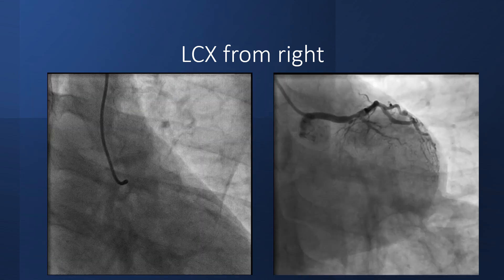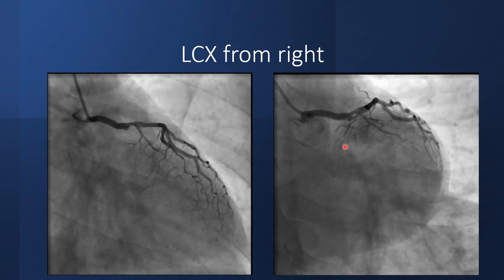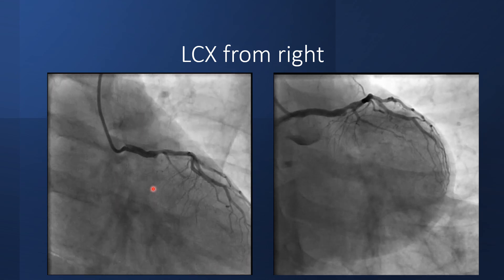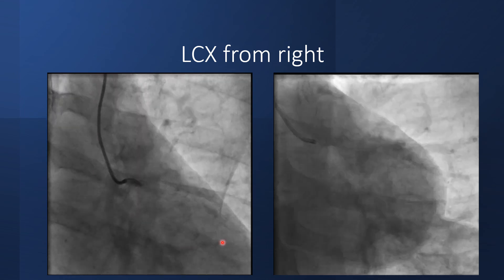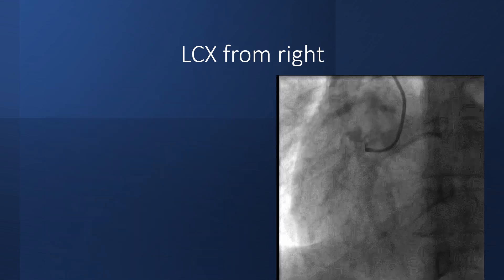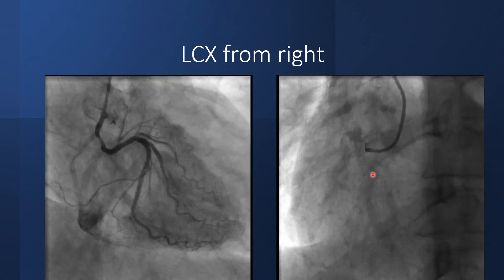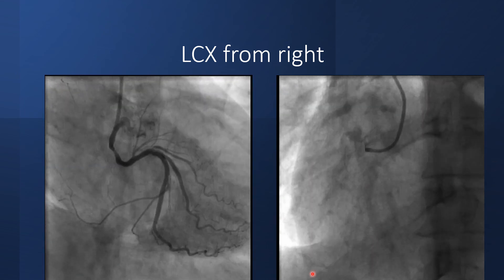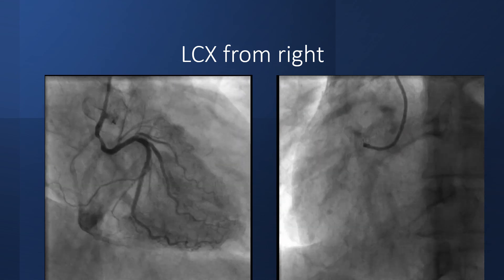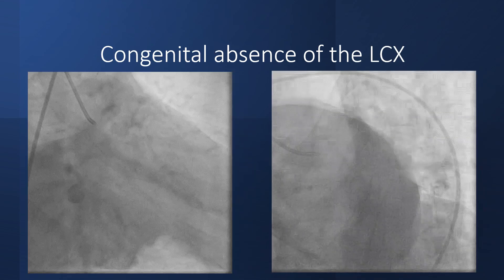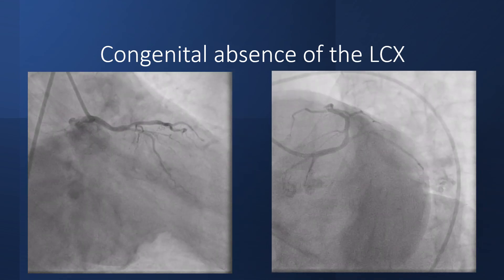In this case, the circumflex looks to be totally occluded. The patient had atherosclerosis and there is some stump and the area supplied by the circumflex is empty. But engagement of the RCA showed the circumflex arising anomalously from the right sinus of Valsalva with a critical lesion at its proximal part. This is a case of congenital absence of the left circumflex.